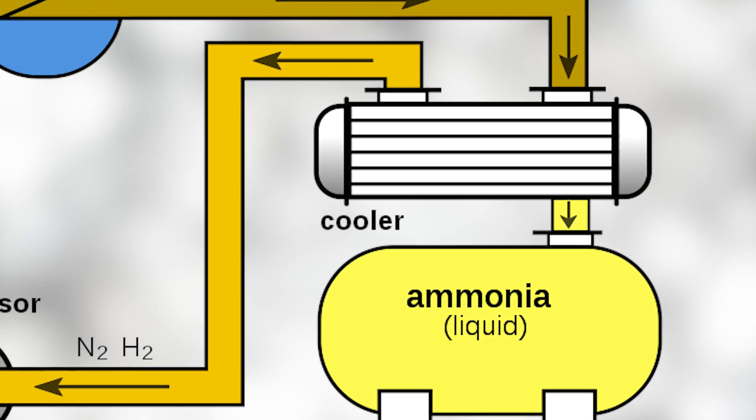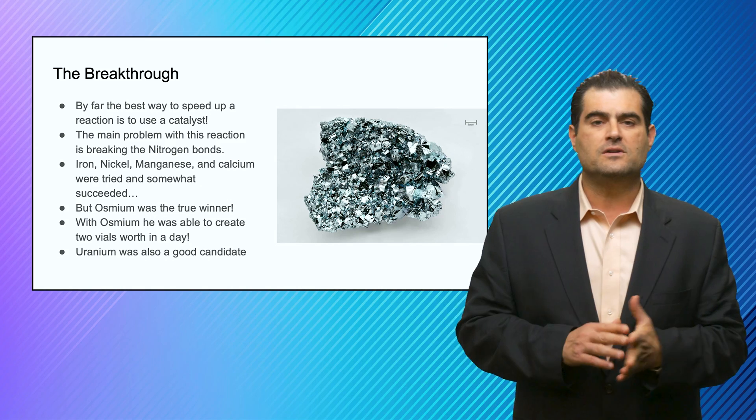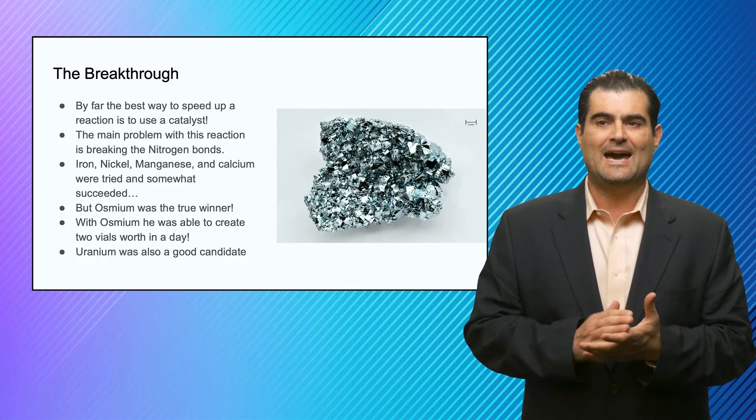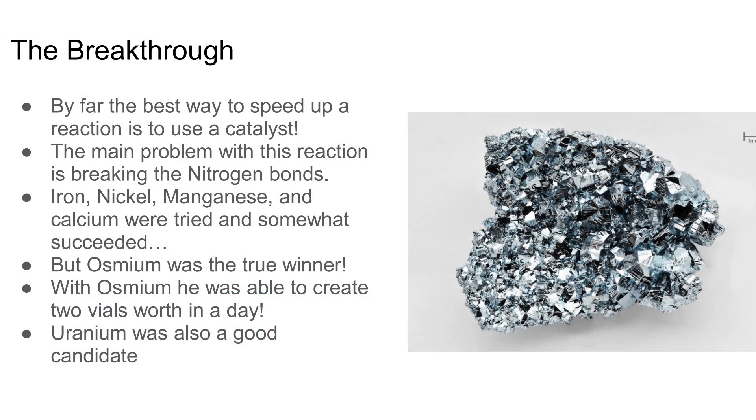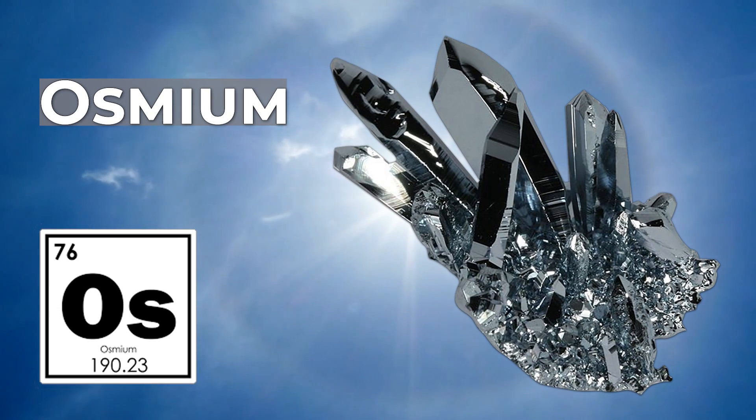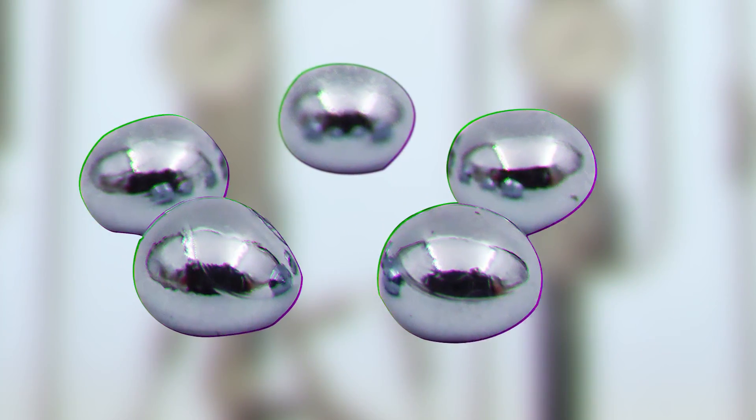Remember, you get out two NH3, ammonia molecules, for every one molecule of molecular nitrogen. So it turns out that by experimenting with different types of catalysts, mostly different types of metals from iron to nickel, manganese and calcium were tried. But the most effective one was a rare one called osmium. That osmium allowed him to dramatically enhance and amplify the production. And it didn't require that he use uranium, which would have probably killed him before he finished this process.